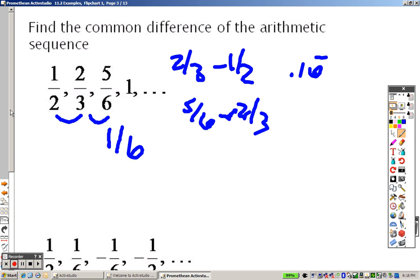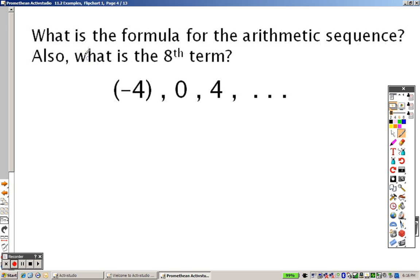And it's the same thing down there, so I'm not going to keep redoing the same problem over and over again. This one, remember, the formula is A_N equals A_1 plus N minus 1 times d. Well, the first term is negative 4